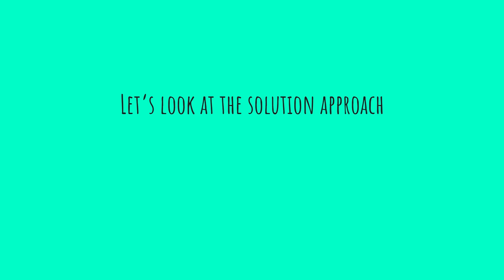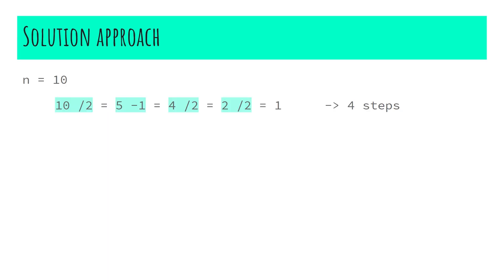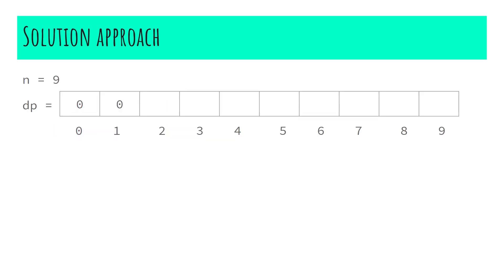You might think of greedily choosing the step that can make n as low as possible and continue the same till it reaches one. But if you observe carefully, the greedy strategy does not work for all cases. For example, if our n value was ten, the greedy solution would divide ten by two to get five, reduce by one to get four, then divide by two consecutively — taking four steps. But using dynamic programming, you can obtain it in three steps: reduce ten by one to get nine, then divide nine by three consecutively to reach one.